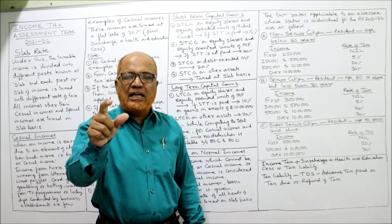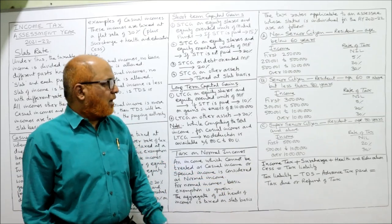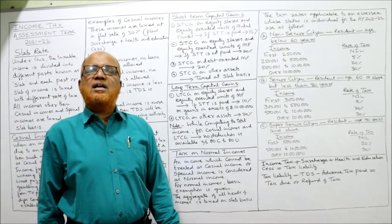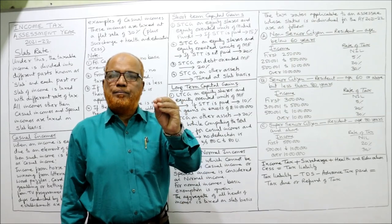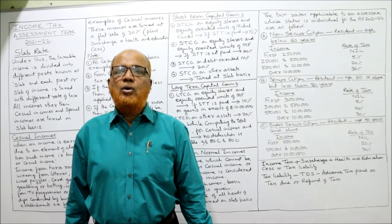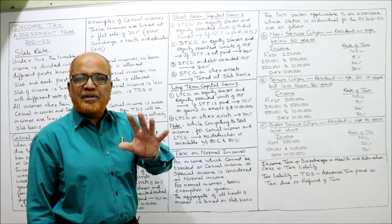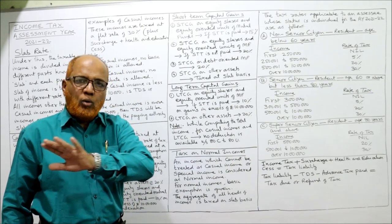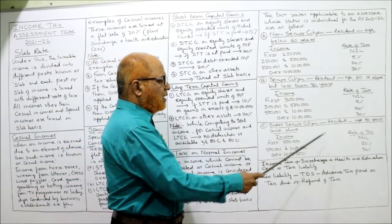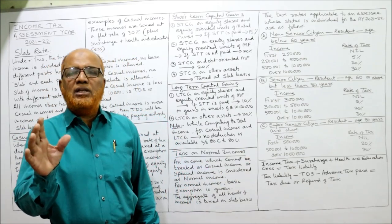Super senior citizen means a person whose age is 80 years and above. For super senior citizens there are only three slabs: first, up to ₹5 lakh — nil (basic exemption limit for super senior citizen is ₹5 lakh). Second slab: ₹5,00,001 to ₹10 lakh — 20%. There is no 5% slab for super senior citizens. Over ₹10 lakh — 30%. So for super senior: 0%, 20%, 30% — no 5% rate. These are the normal rates of tax.